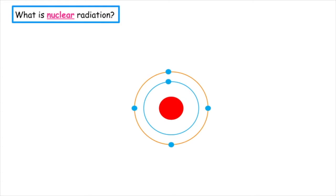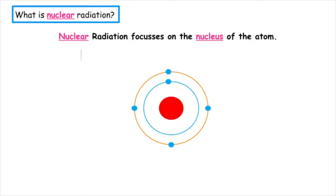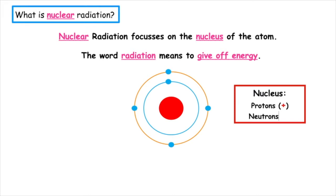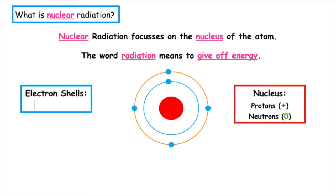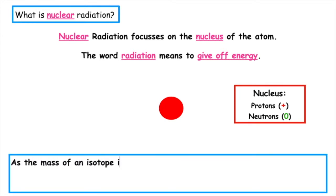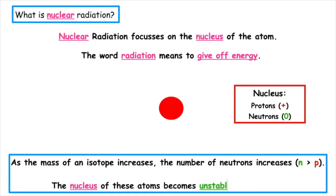So what is nuclear radiation? Nuclear radiation focuses on the nucleus of the atom. The word radiation means to give off energy. When we look at the structure of the atom, we have the nucleus, which contains the protons and the neutrons, and we have the electron shells, which contain the electrons. The nucleus — we're only focusing on the protons and the neutrons. As the mass of an isotope increases, the number of neutrons also increases. The nucleus of these atoms can become unstable and therefore split up to try and stabilize. This is what happens when we're looking at nuclear radiation.